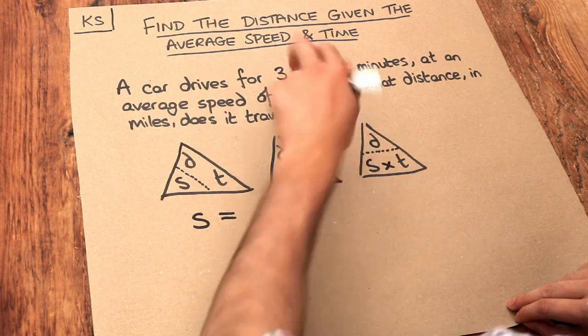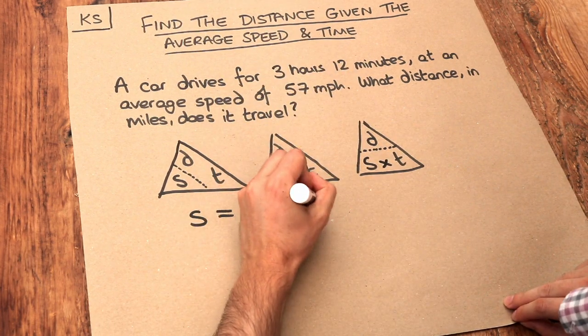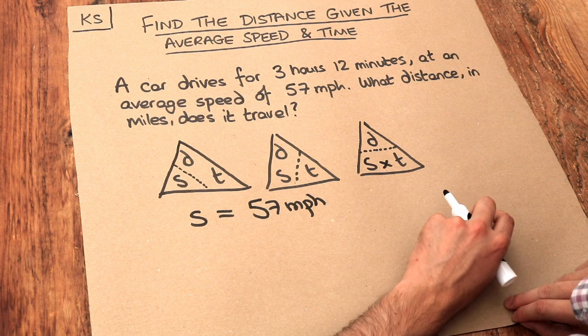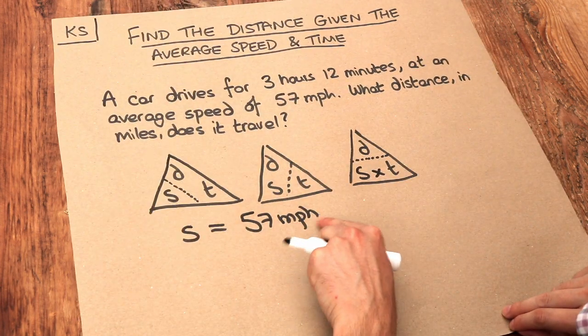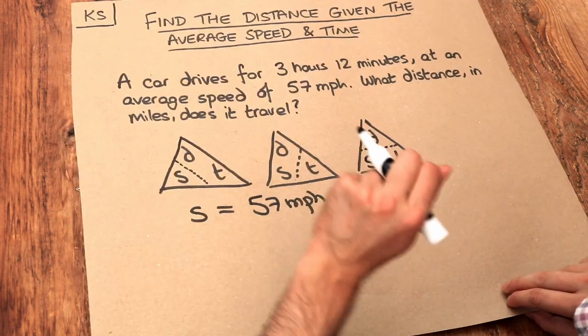The speed is equal to 57 miles per hour, and we need the time as well. But notice the distance is in miles and this speed is in miles per hour, so we want this 3 hours 12 minutes just in hours, not in hours and minutes.